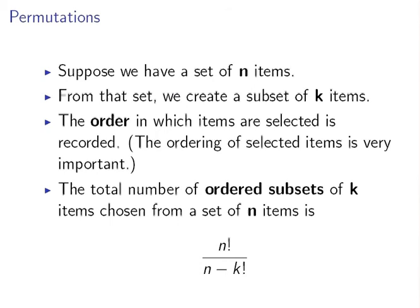For example, I'm going to pick two items out of six. Now the order in which items are selected is very important. I'm going to record those. Again, this goes back to the definition of a permutation that the order is critical.